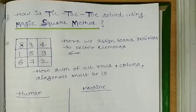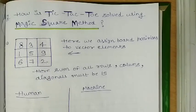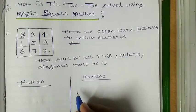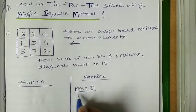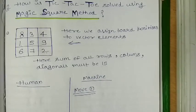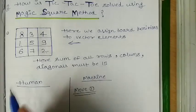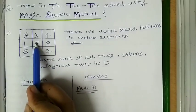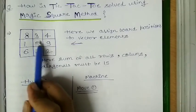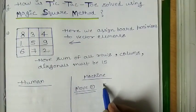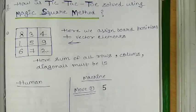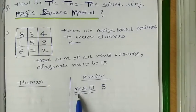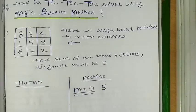We will make some moves. Suppose the first move is taken by machine — Move 1. In this move, it is taking this position, and the vector element which is present here is 5. So it will take element 5.